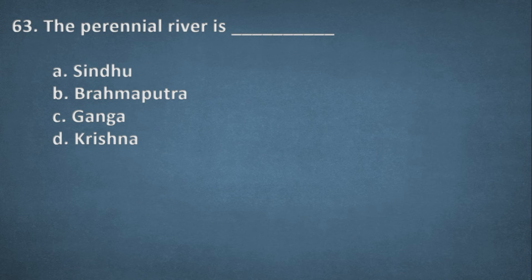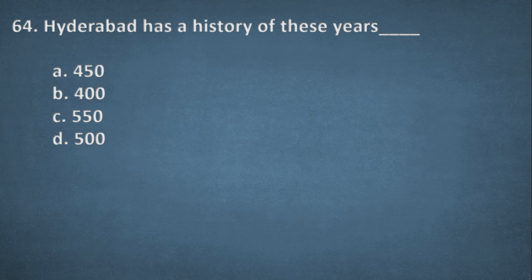Next one. The perennial river is. Options: Sindhu, Brahmaputra, Ganga, Krishna. The right option, C, Ganga. Next one. Hyderabad has a history of these years. Options: 450, 400, 550, 500. The right option, B, 400.